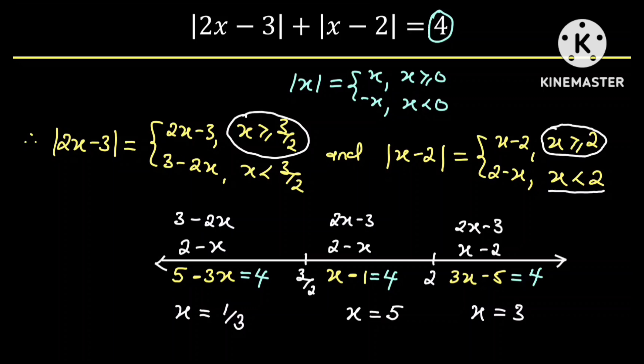From here we can identify the solutions to this equation. We know that 3 is greater than 2, so x equal to 3 is one of the solutions. But 5 does not lie between 3/2 and 2, so x equal to 5 is not a solution. We also know that one third is less than 3/2, so x equal to one third is another solution.